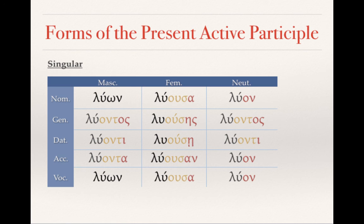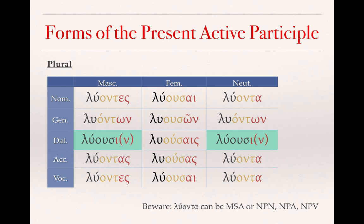Here are the plural forms of the present active participle. Luontes is exactly the sort of form we would see with arjontes, the plural of arjon. The masculine/neuter plural forms — luontes, luonton, luontas — have the 'ont' infix throughout, with endings we expect from third declension nouns. The feminine plural — luusseis, luusseis, luusseis — has identical endings to first declension noun plural forms with the consistent 'us' infix.